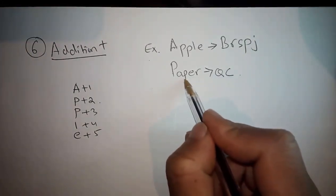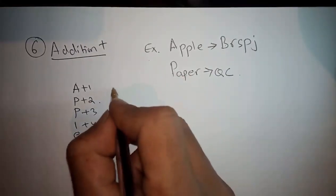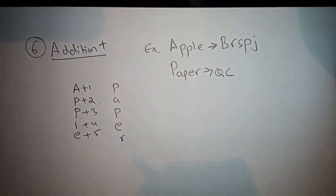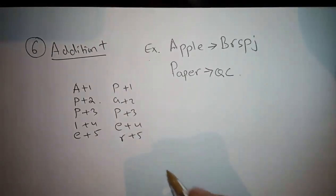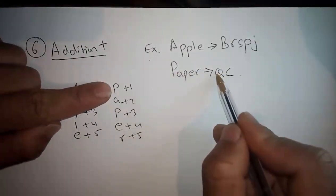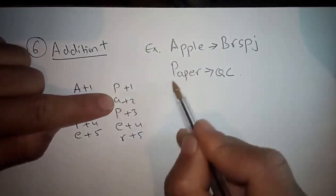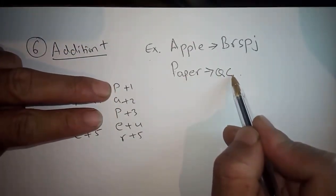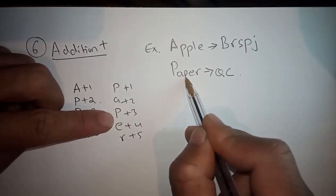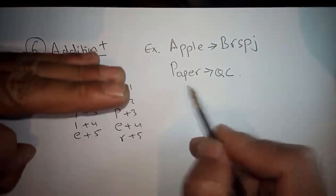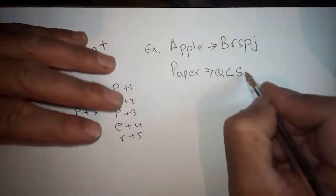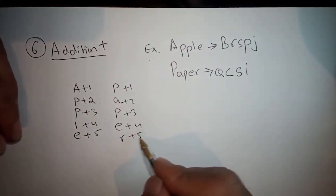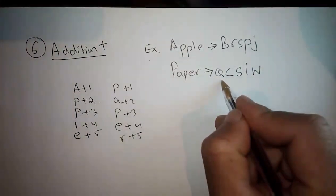In this case, we'll write PAPER: P plus one becomes Q, A plus two becomes C (A, B, C), P plus three becomes S (P, Q, R, S), E plus four becomes I (E, F, G, H, I), R plus five becomes W (R, S, T, U, V, W). So Paper will be coded as Q, C, S, I, W.